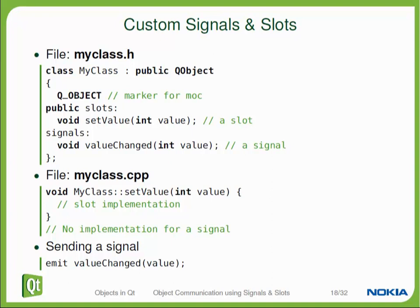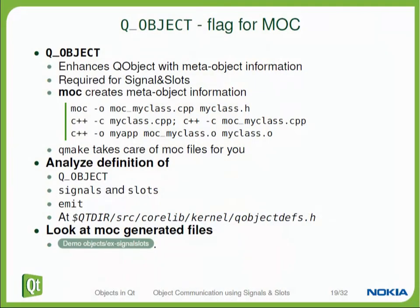You might be wondering what the Q_OBJECT macro does in your header file. It marks the header file for being processed by the meta object compiler. The meta object compiler, MOC, comes with your Qt installation and is executed during the build process. It looks at your header file and generates the implementation of the signals and something called the meta object for this class. This meta object contains static information about what kinds of signals and slots your class has. The code generated by the MOC is compiled just as regular C++ code and becomes a part of your application — effectively, it becomes part of the implementation of your class. Your class now consists of the header file, the C++ code you wrote yourself, and the C++ code generated by the MOC.